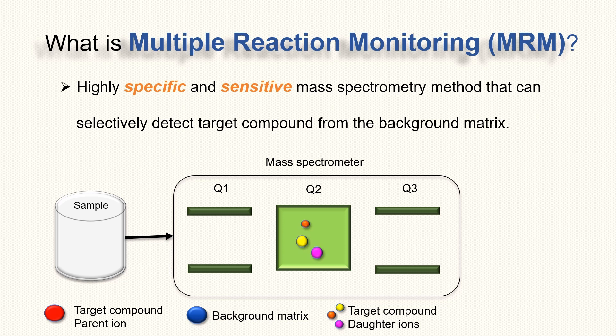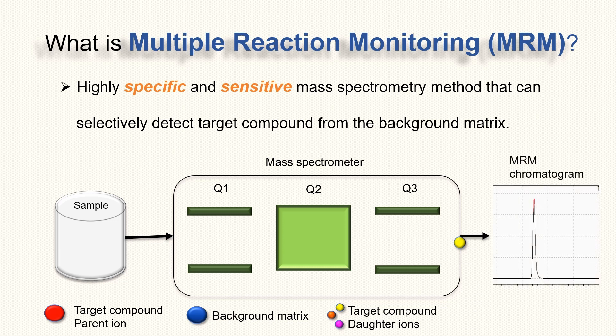Then, collision-induced dissociation takes place in Q2, and the parent ion is fragmented into several daughter ions. Finally, Q3 is set in a way that only the selected daughter ion can travel through Q3 to reach the detector. The final signal is displayed as a peak in the MRM chromatogram.